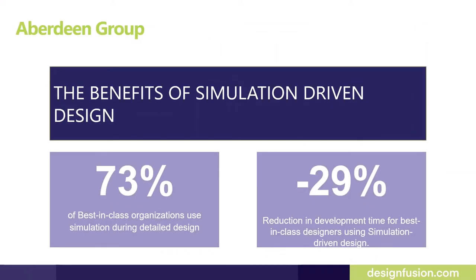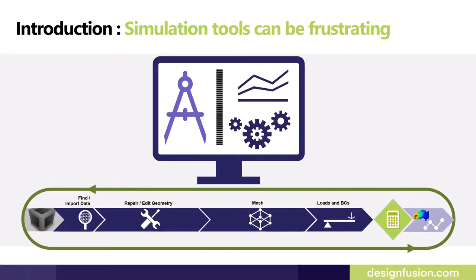Let's look at a survey and report conducted by the Aberdeen Group about the benefits of simulation-driven design. They found that 73% of best-in-class organizations are using simulation during the detailed design process, and because of that, they were able to reduce 29% of their product development time. Simulation done by designers at the initial stage of detailed design can help reduce product development time as well as cost.